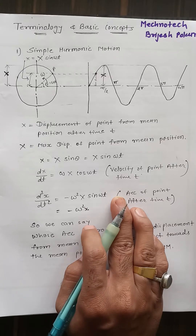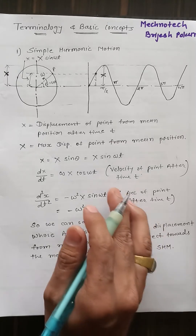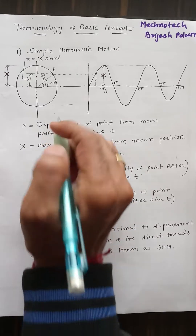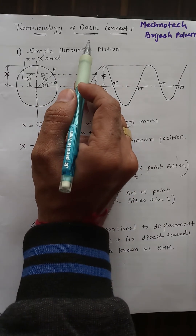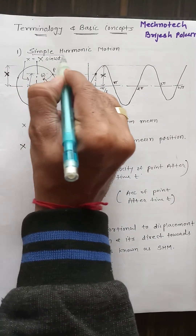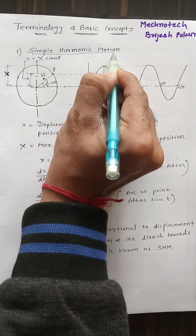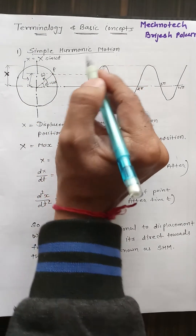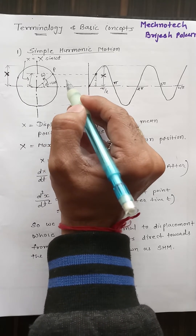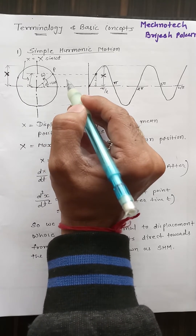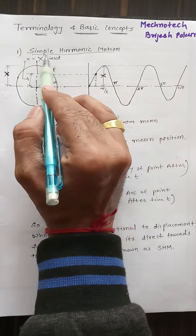Hello friends, welcome to Magnotek YouTube channel. This is the second part for vibration, and today we are going to discuss the terminology and basic concepts of vibration, the first of which is Simple Harmonic Motion. Most vibrating systems work on simple harmonic motion, so it is necessary to understand this term.